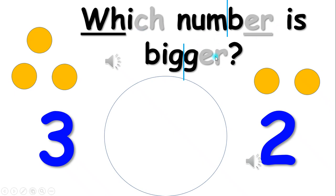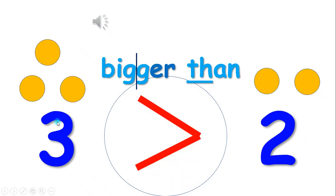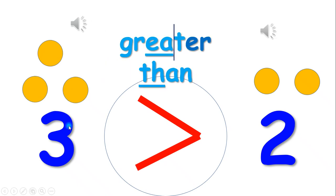Which number is bigger? Is it three or two? Good job! Three is bigger than two. As you can see here, the alligator always opens his mouth to the bigger number, which is three. Instead of saying bigger than, you say greater than. Three is greater than two.